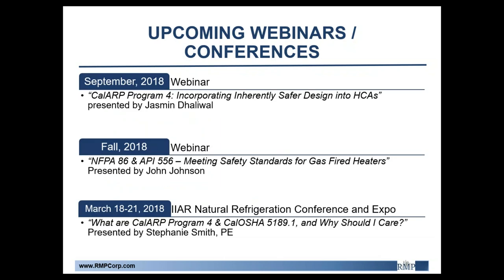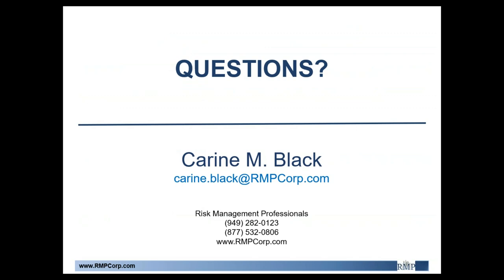That's the end of my presentation. I did want to let you know about some upcoming webinars. In September, we'll be doing one on CalARP Program 4 — incorporating inherently safer design into HCAs, presented by Jasmine Dhaliwal. Sometime in the fall, we'll cover NFPA 86 and API 556 — meeting safety standards for gas-fired heaters, presented by John Johnson. And we'll also be at the IIAR conference later this year where Stephanie Smith will present on CalARP Program 4, Cal OSHA 5189.1, and why you should care. We'll now take questions.